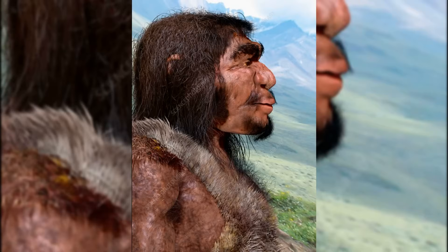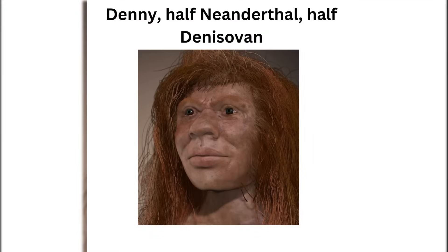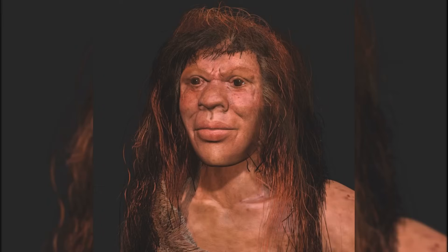But how did Denisovan DNA even find its way into Europe in the first place? The answer involves a mix of migrations and interbreeding events that span thousands of years. For starters, Denisovans and Neanderthals themselves interbred in Siberia. Evidence for this comes from the genome of an Altai Neanderthal that lived roughly 90,000 years ago — this individual's DNA revealed a significant Denisovan contribution of about 17%.